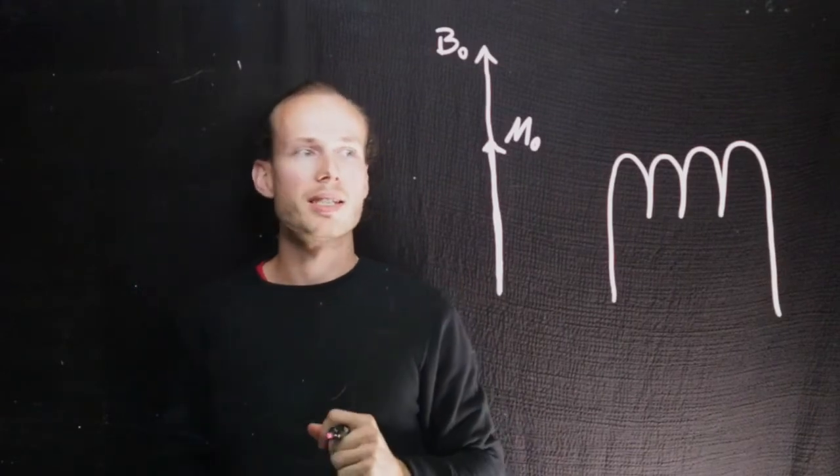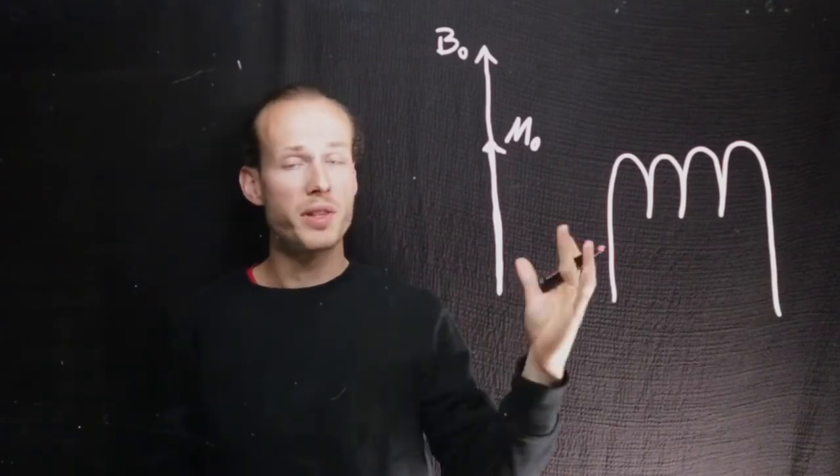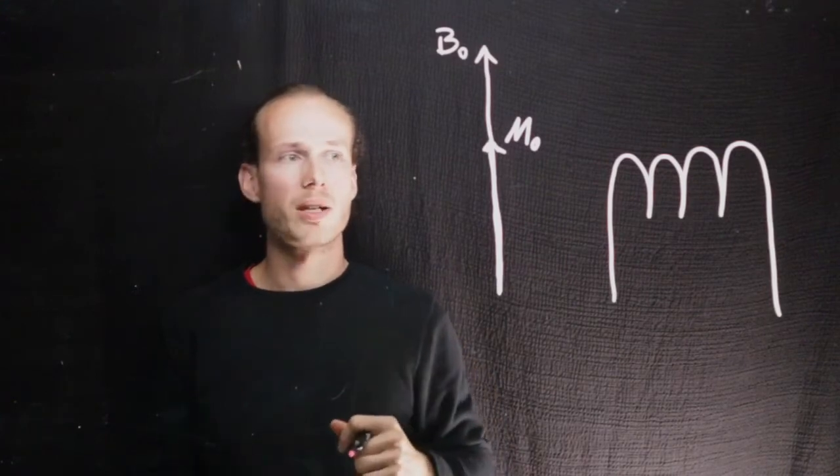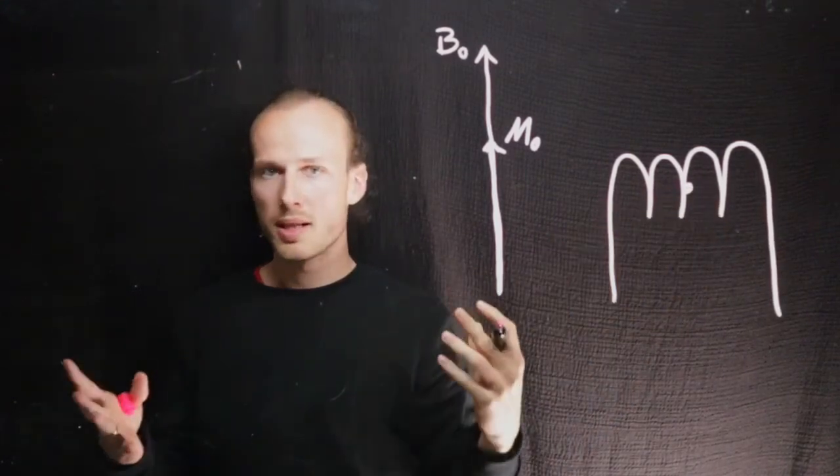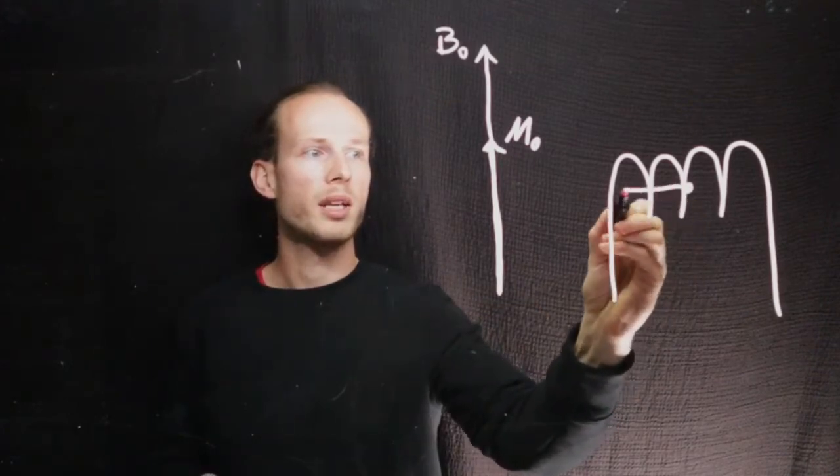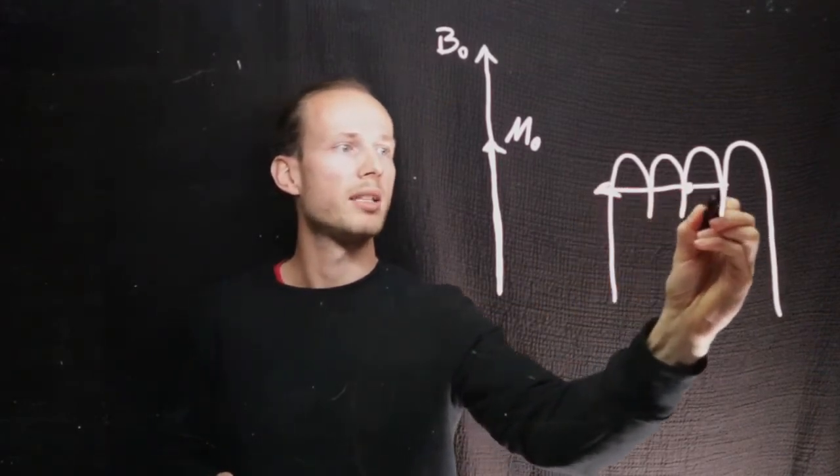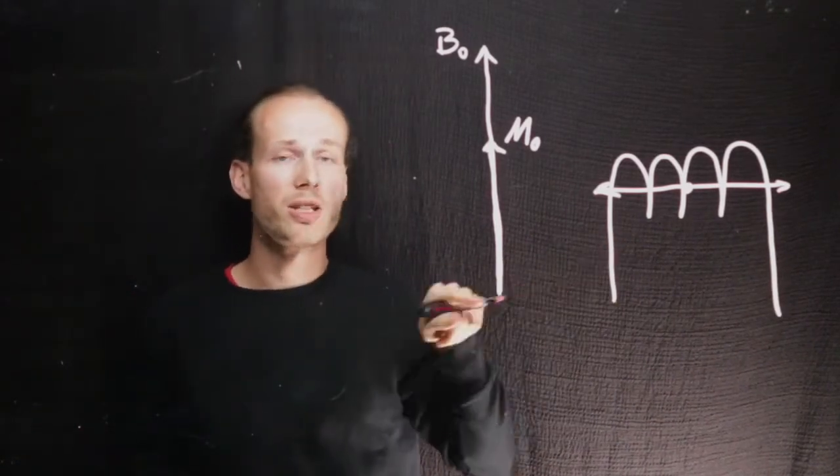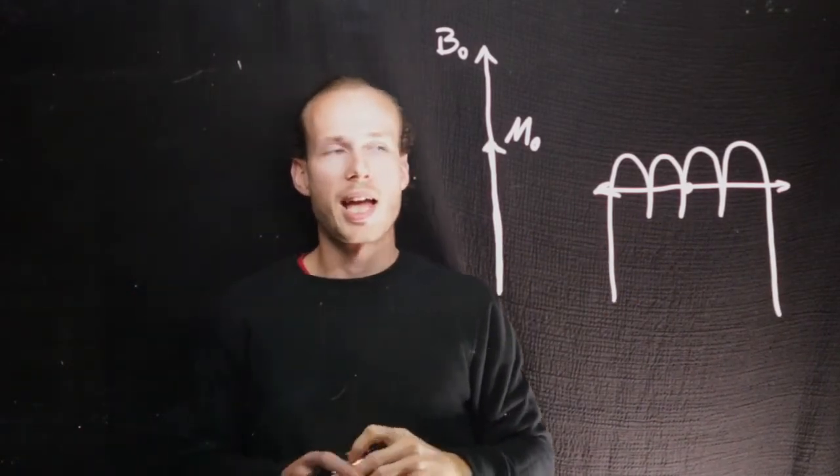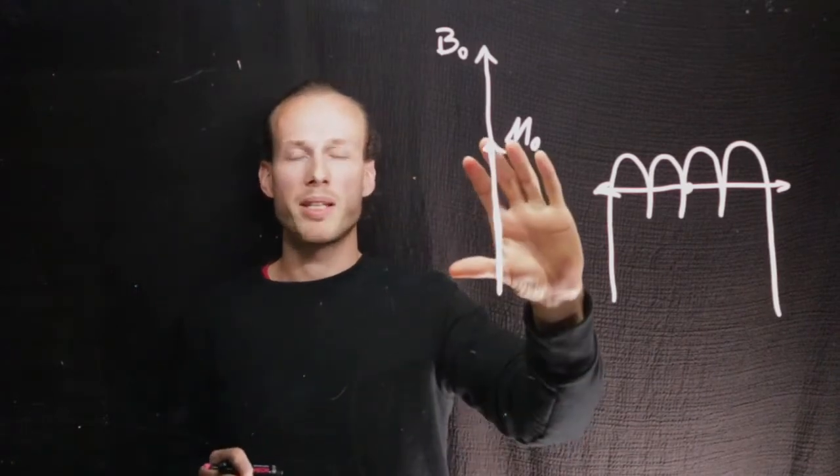The way we do this is we are exciting the magnetization with that same coil and disturb it from its equilibrium position. The way this is done is by sending an alternating current through this coil, which I will indicate here with these two arrows, meaning that the magnetic field inside the coil is changing back and forth. And it is coupling with this magnetization.